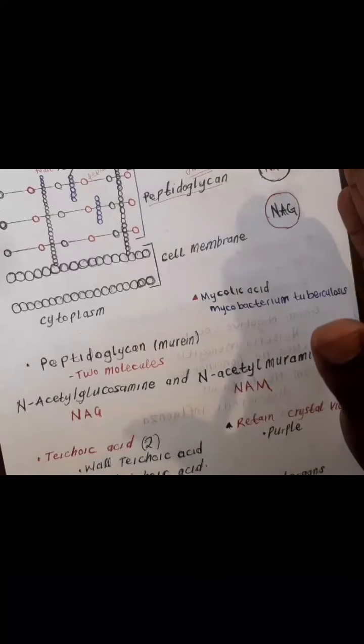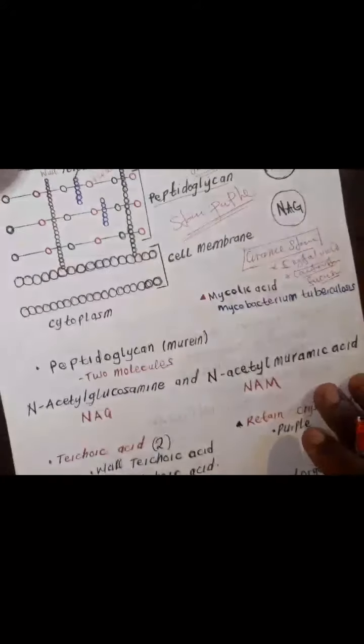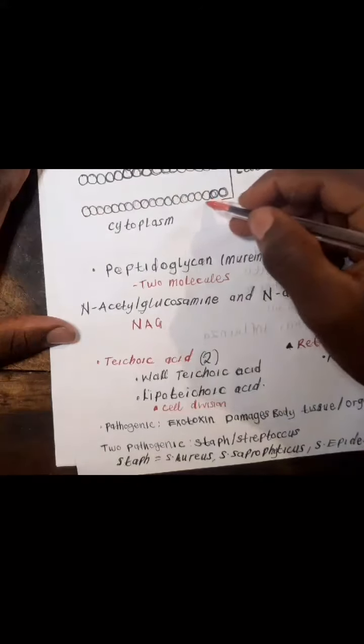How can gram-positive and gram-negative bacteria be identified? In the laboratory, they can be identified using the gram stain. Gram-positive bacteria stain purple. We consider the inside to be the cytoplasm, and this is the cell membrane. On top of the cell membrane, there is a cell wall made up of peptidoglycan.